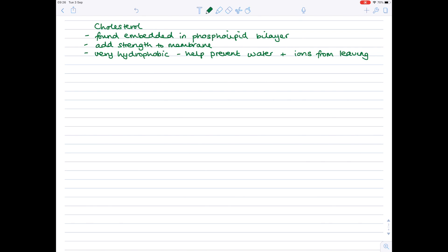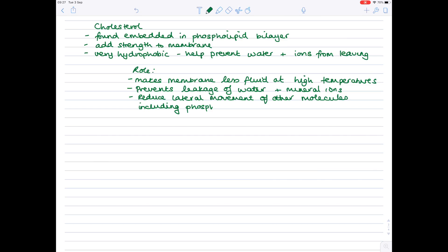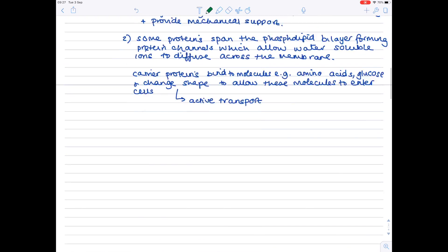We need to talk about their exact roles that you need to learn for your exam wording. Its role includes the fact that it makes the membrane less fluid at high temperatures. Prevents leakage of water and mineral ions. And, because they're embedded within that phospholipid bilayer, they actually give stability. They prevent the sliding motion of the phospholipids. And we call that lateral movement. So, they reduce lateral movement of other molecules, including phospholipids.